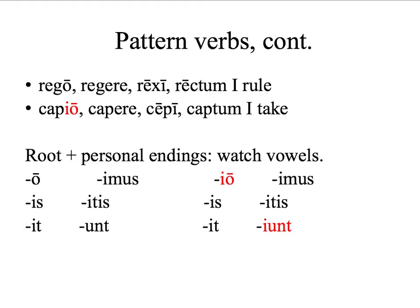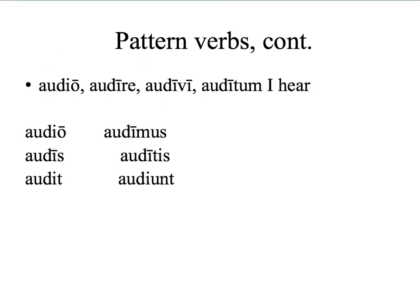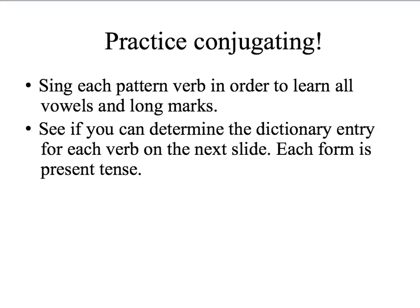Third conjugation: rego, regere — or sometimes we use the verb mitto, mittere. When you conjugate mitto or rego, we're looking for short I's, and then in the third person plural, a U. Remember there's a subgroup called the three IO verbs, all of which forms have an I in them — third plural: iunt. Finally, fourth conjugation has a long I sound that shows up all over the place, except third person singular and third person plural, which are short. I can't urge you enough to sing the pattern verb song to get all of the present indicative forms down.